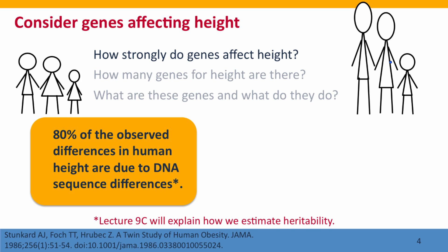We'll talk about how we estimate heritability in lecture 9C. That's because we can't really talk about how we measure heritability until after we've discussed in detail how inheritance actually works, and that's going to happen mostly in Module 7. Until then, though, we can still use the concept of heritability to think about identifying the genes responsible for the phenotypes we care about.